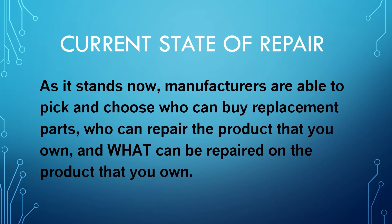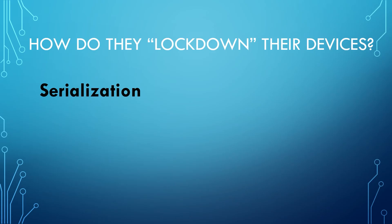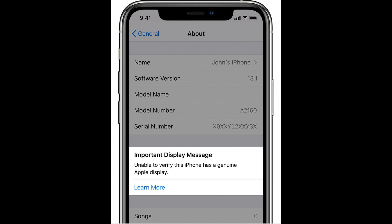As it stands now, manufacturers are able to pick and choose who can buy replacement parts, who can repair the product that you own, and what can be repaired on the product that you own. There are many ways that manufacturers do this, but the most common one is serialization of parts. Serialization is when a manufacturer locks down a part using software encryption so that that part can only be used with that specific device.